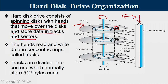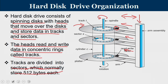The arm assembly moves together — if it moves inside, all heads move inside simultaneously. There are two kinds of movement: arm movement along the arm assembly and spindle rotation, so the appropriate track gets under the read head. The heads read and write data in concentric rings called tracks, and tracks are divided into sectors, which can generally store 512 bytes of data. Each block within a sector also stores 512 bytes.